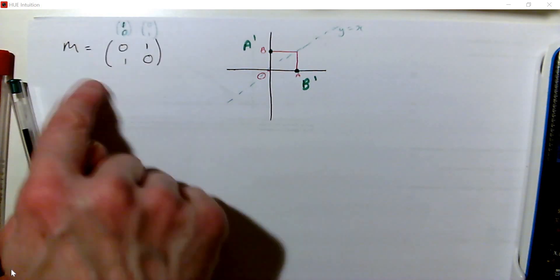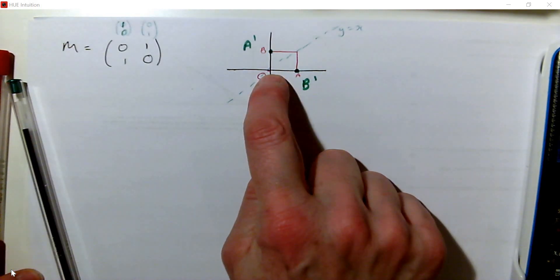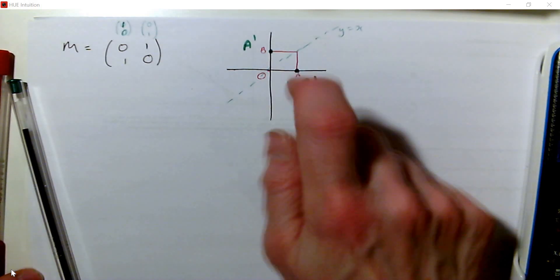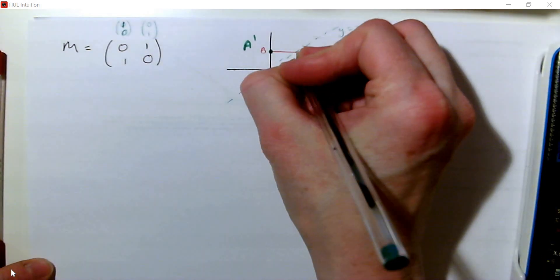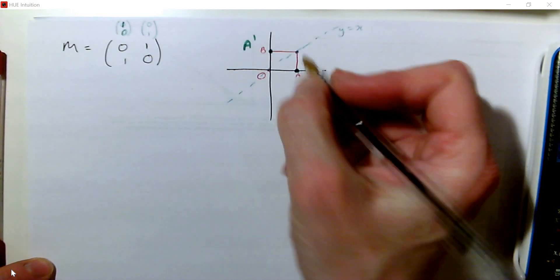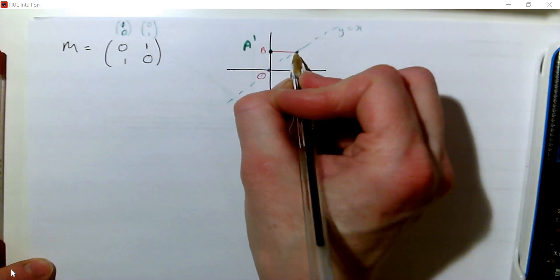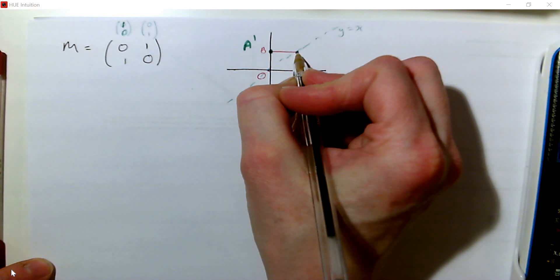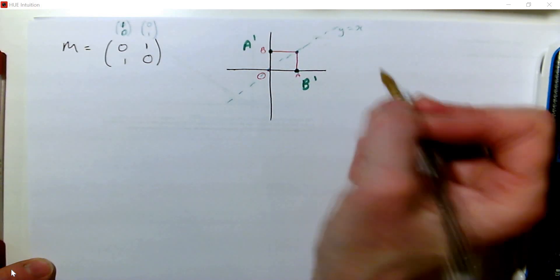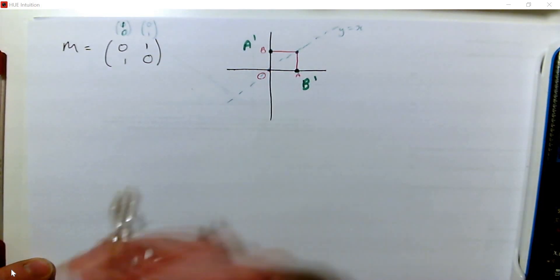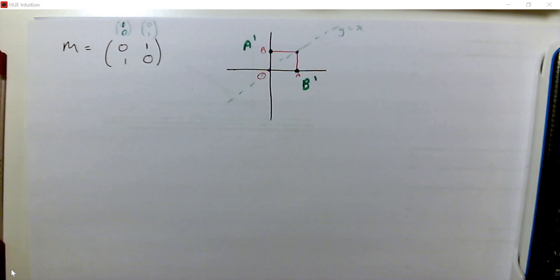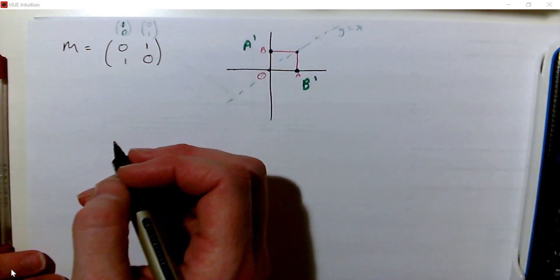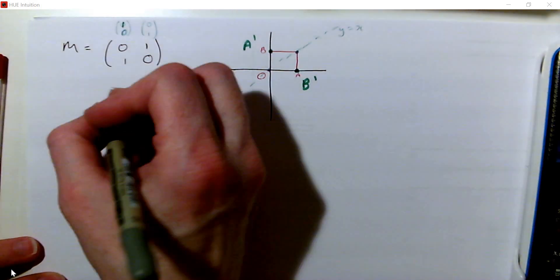For this transformation, we can see that the point 0, 0 and in this particular case the point 1, 1 are invariant. Because if we reflect anything that's already on the line, it's going to stay where it is — we call it an invariant point. In fact, 0, 0 is always invariant for any 2 by 2 linear transformation.